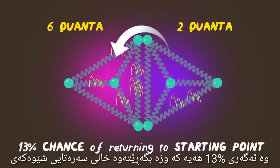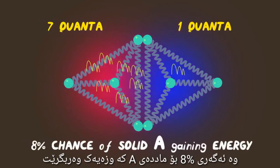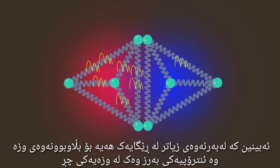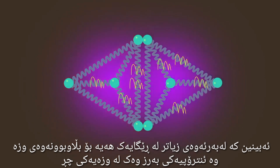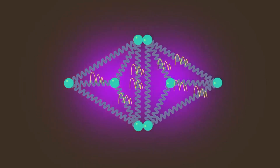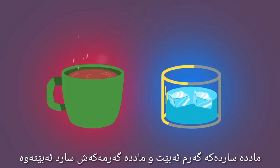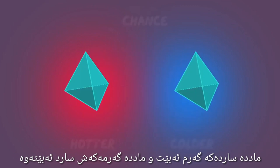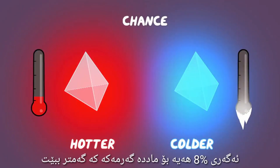There's a 13% chance that it'll return to its starting point, and an 8% chance that A will actually gain energy. Again, we see that because there are more ways to have dispersed energy and high entropy than concentrated energy, the energy tends to spread out. That's why if you put a hot object next to a cold one, the cold one will warm up and the hot one will cool down.